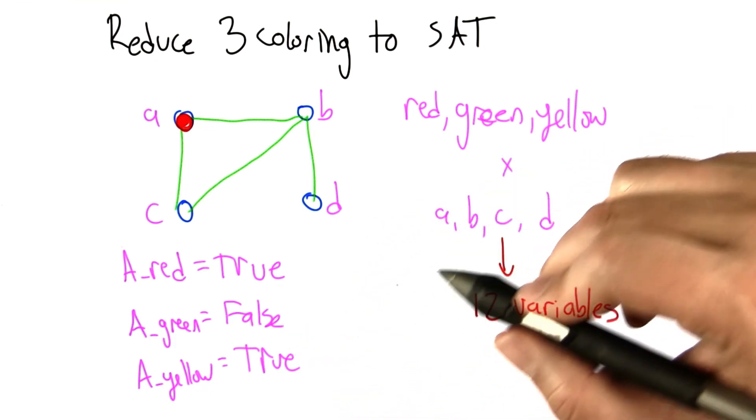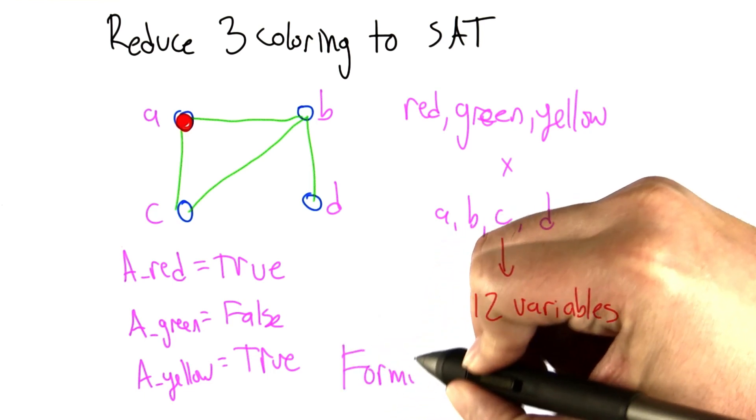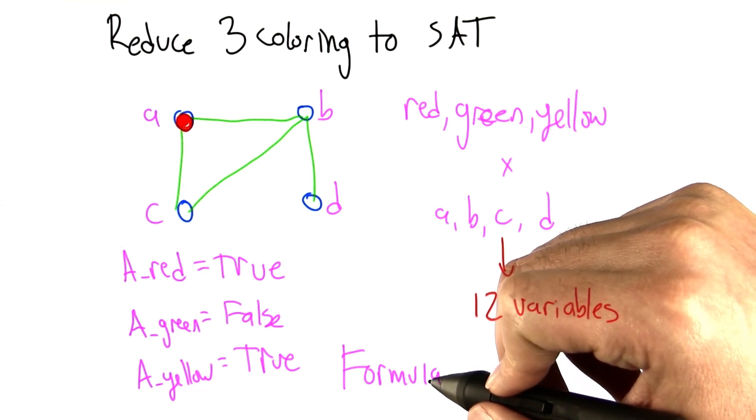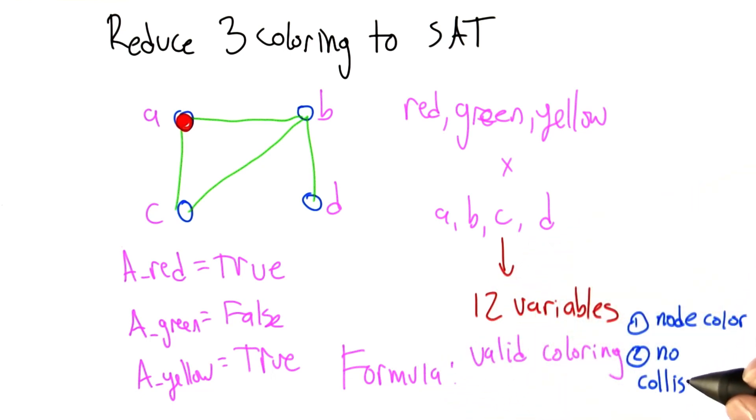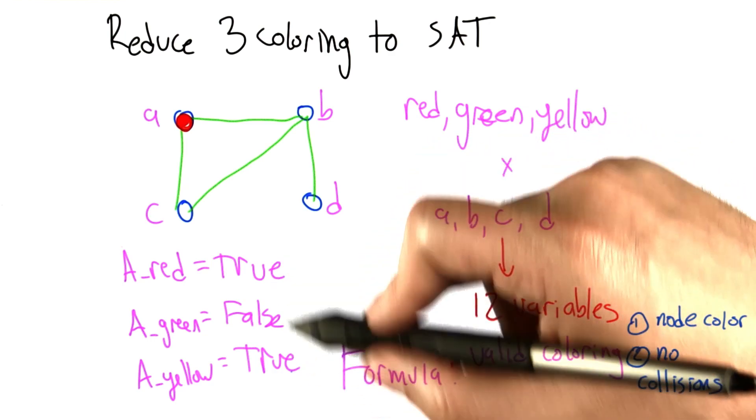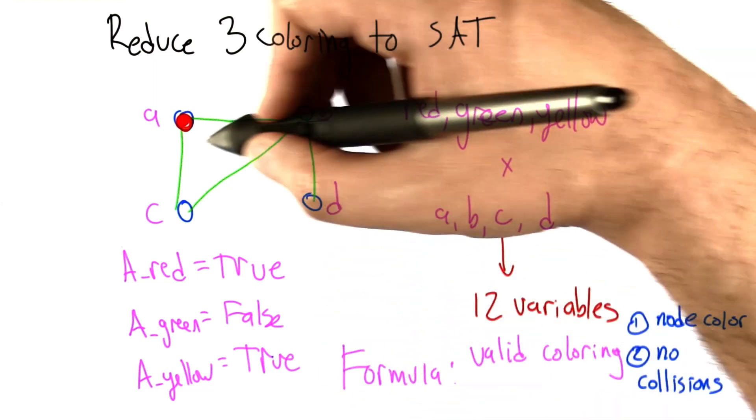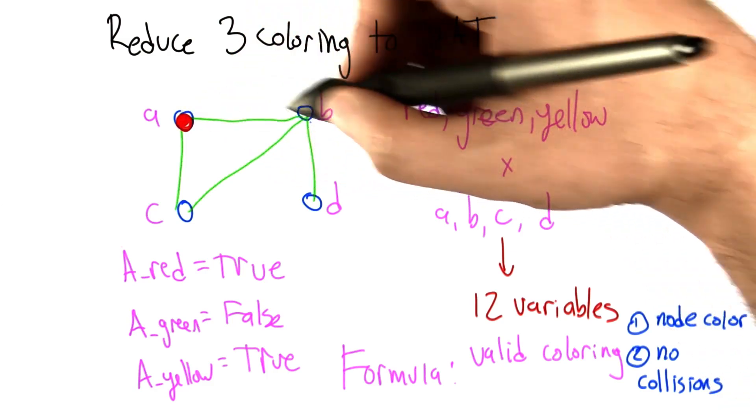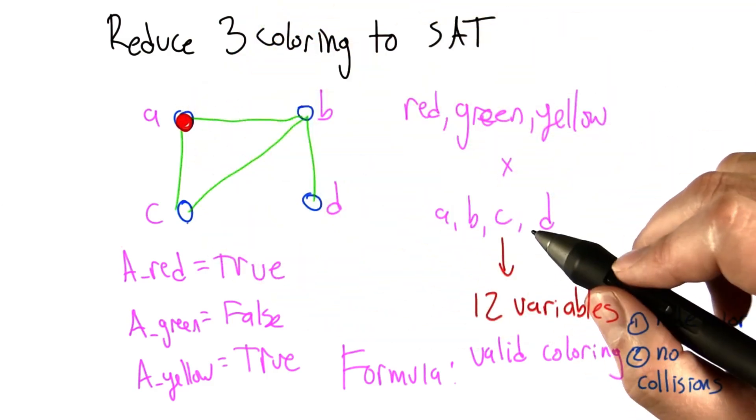So what we have to do now is given these 12 variables, we have to create a formula that is true if and only if it corresponds to a valid coloring, meaning that both exactly one of each of these triples of variables are true and there's no collisions. For example, we can't have A colored red and B colored red because they're connected by an edge. They all have to be different if they're connected by an edge.